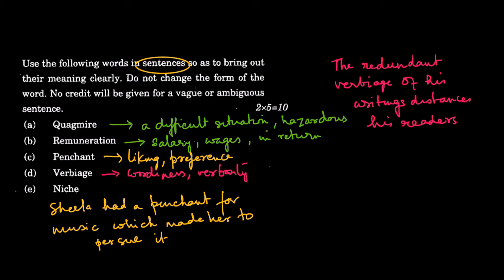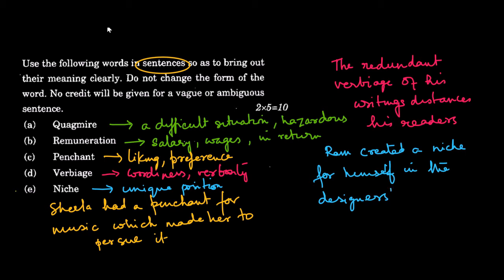Next, niche. Niche means it's a unique position. Actually, it is a shallow hole or crevice in a wall, which is very uniquely built. So niche means it's a unique position. And the sentence could be, Ram created a niche for himself in the designer's space.